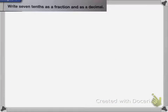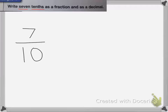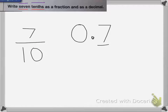Write 7 tenths as a fraction and a decimal. The 7 is going to be your numerator, and tenths is going to be your denominator for the fraction part, so it's going to be 7 tenths. As a decimal number, you're still going to use the number 7, but tenths tells you what place value it's in. The 7 goes in the tenths place, which is the first place value after the decimal, so it's going to be 0.7, seven tenths.